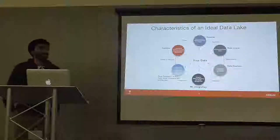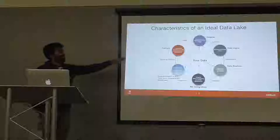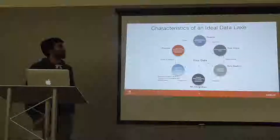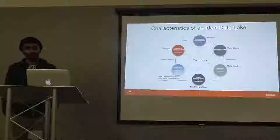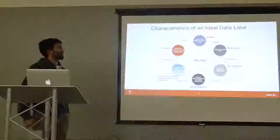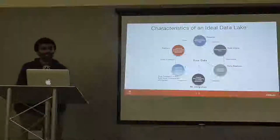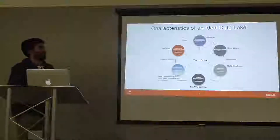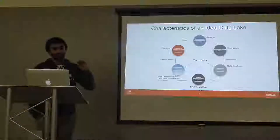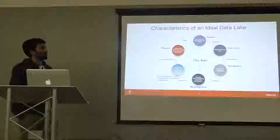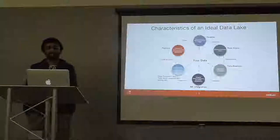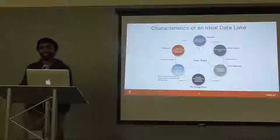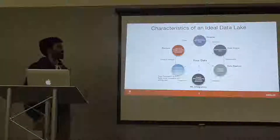Some characteristics of an ideal data lake: at the center is obviously your data — your biggest asset. Generally the first thing you want to do is onboard your data sources and data types, which can include varying structures. You need some way to prepare your data — to cleanse it, filter it, and structure it as you bring it into your data lake. You also need to apply certain specifications or business rules against your data, like masking social security numbers or formatting dates in a certain format. That's where a rules engine might come into play.